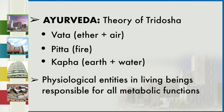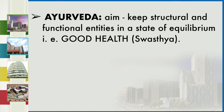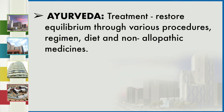Psychologically, the entities in living beings are responsible for all metabolic functions. The aim in Ayurveda is to keep structural and functional entities in a good state of equilibrium — that is good health (Swastha). The cause of imbalance involves internal or external factors that lead to disturbance in natural equilibrium, giving rise to diseases. Treatment is to restore equilibrium through various procedures, regimes, diets and non-allopathic medicines.